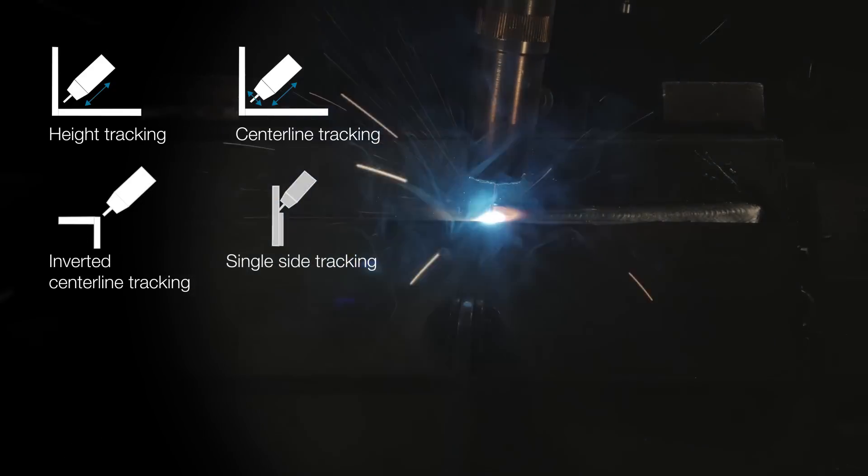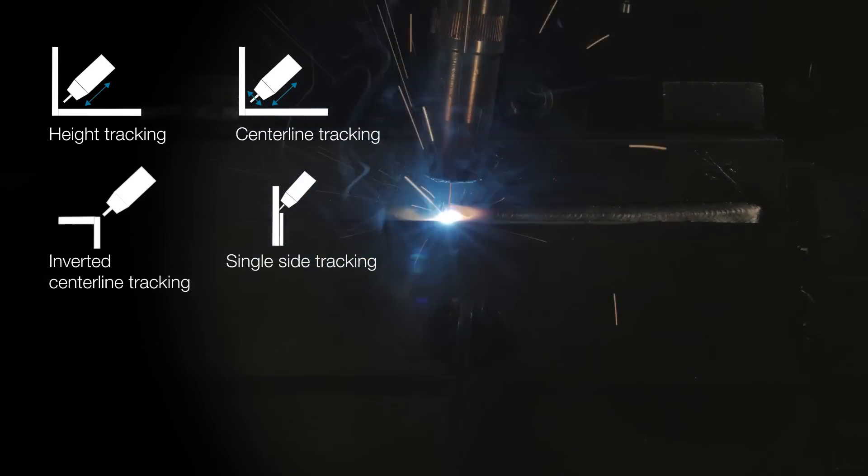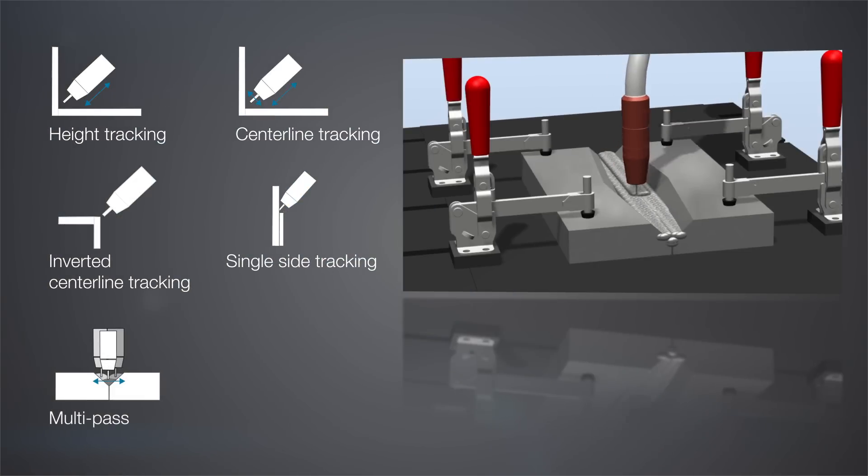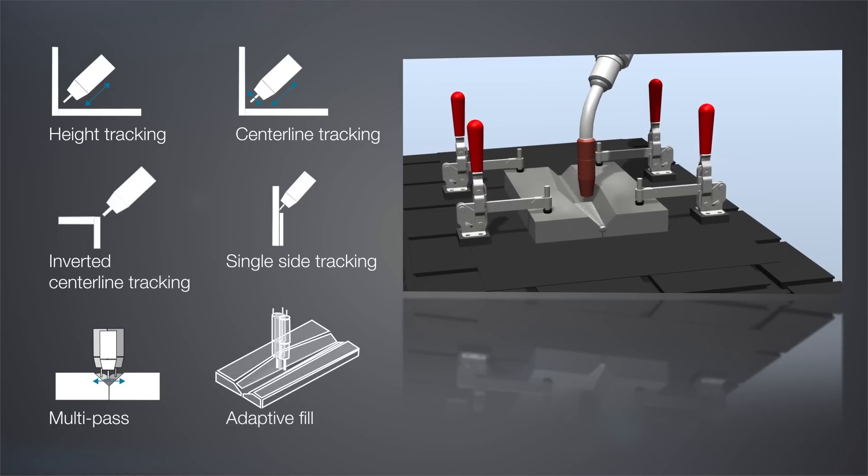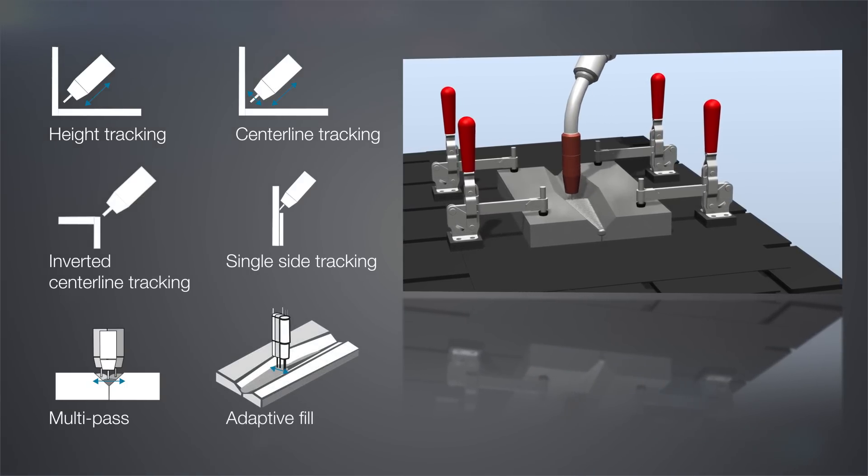Four: Single side tracking for lap joints where one side is consumed. Five: Multi-pass for multi-layer welding. Six: Adaptive fill, automatic weave width adaptation and adjustment for gap changes at the workpiece.